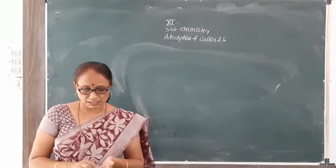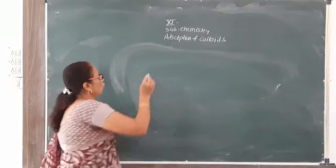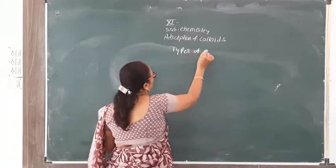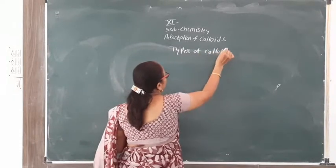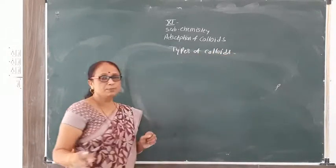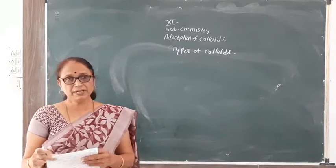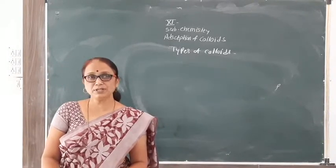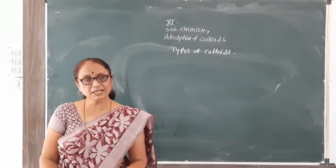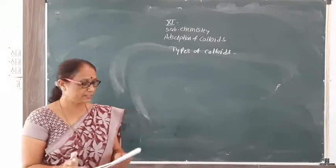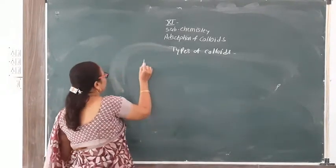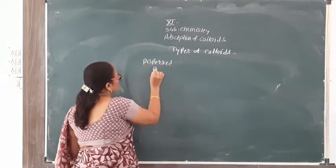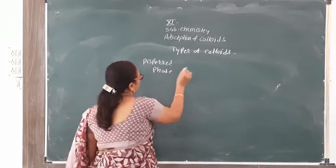Now let us discuss the types of colloids based on physical state. Depending on the state of the dispersed phase and dispersion medium, there are eight types of colloids. The dispersed phase can be solid, liquid, or gas, and the dispersion medium can also be solid, liquid, or gas.